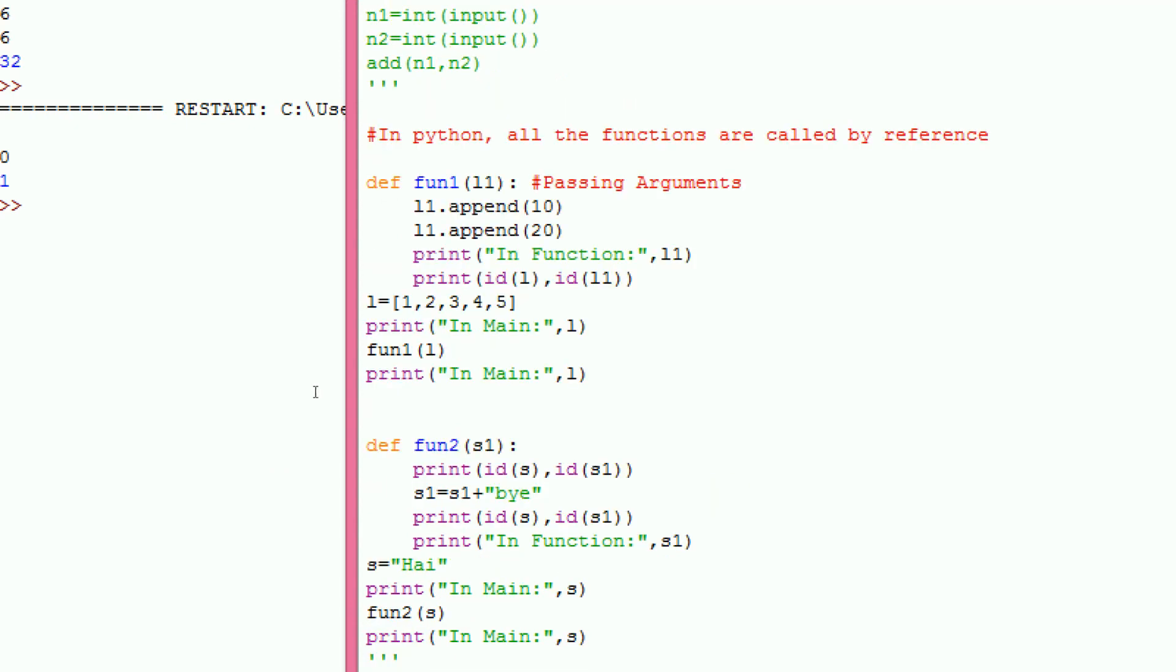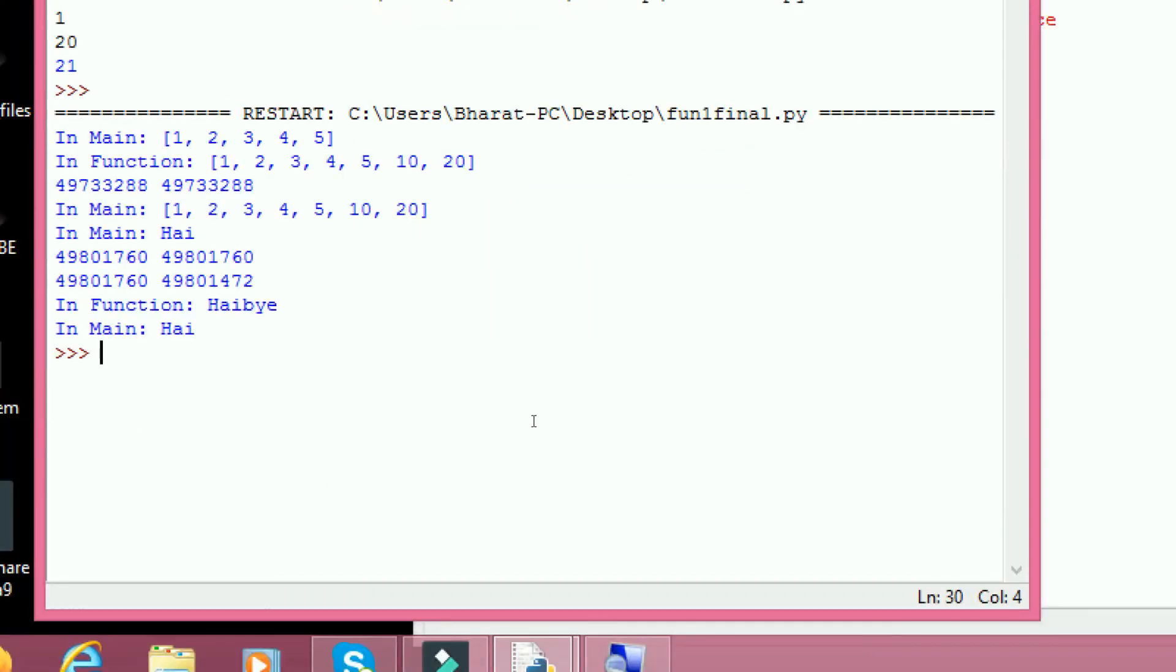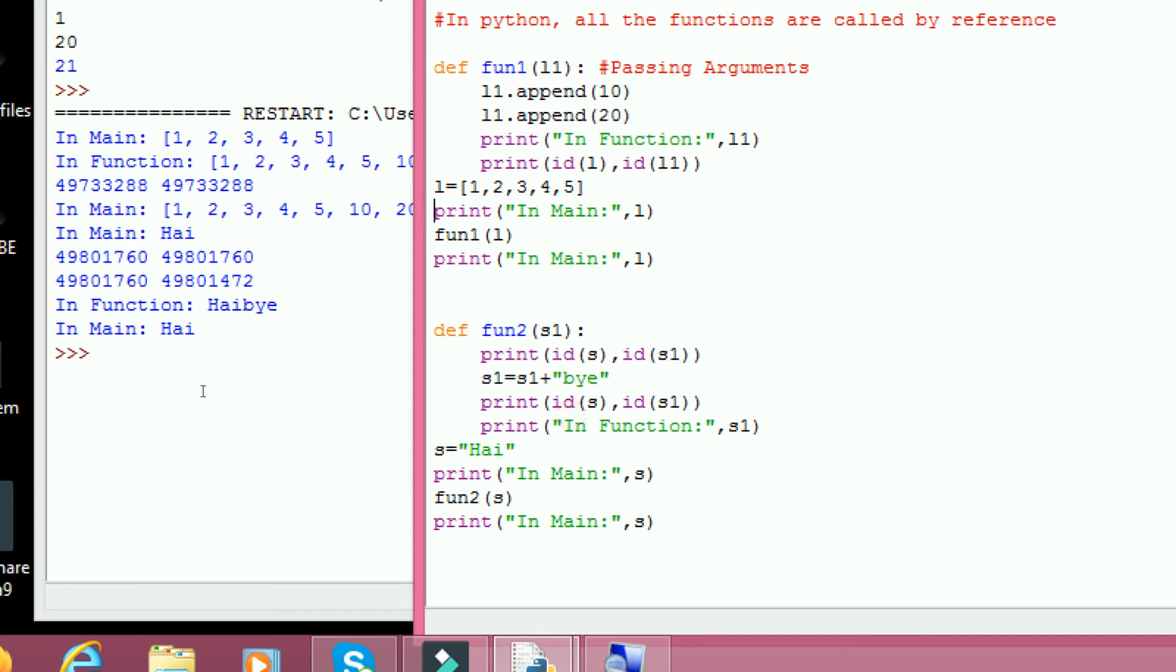So now we can see how the Python functions are called. In Python all functions are called by reference. So these are the two functions defined. One function name is function1, another function is function2. Here I pass the argument as a list. In the function it changes to 1, 2, 3, 4, 5, 10, 20. These two object IDs are the same, 49973200. So next when we are returned back to the main, same in main. Coming to next function2, high.